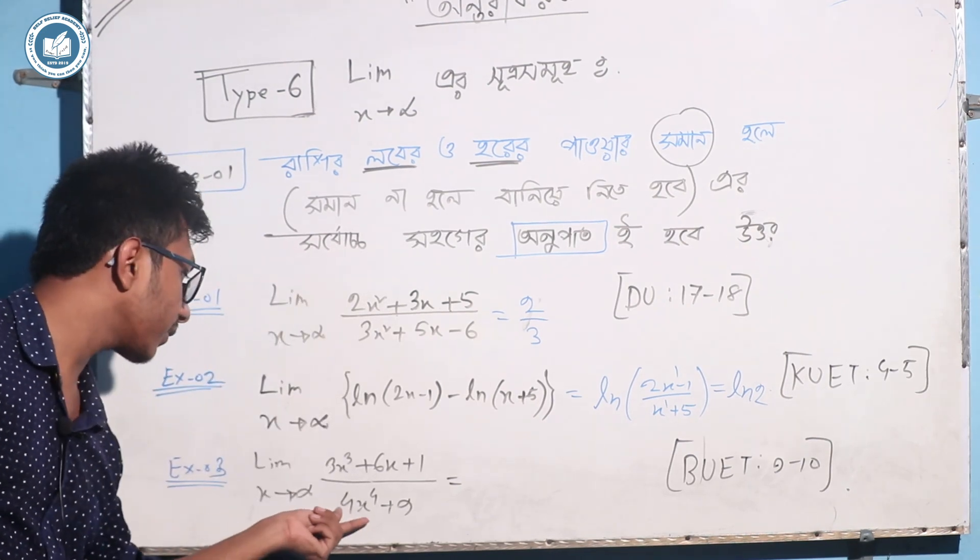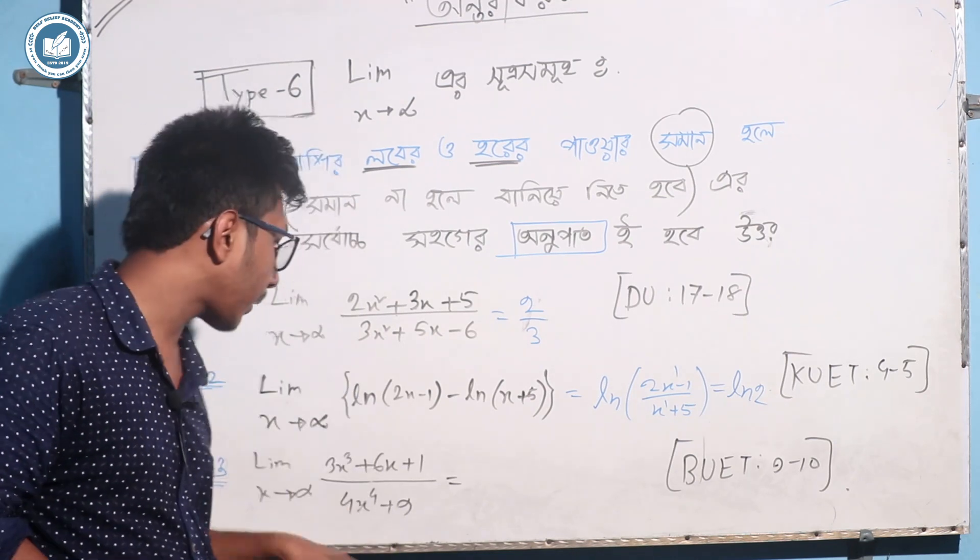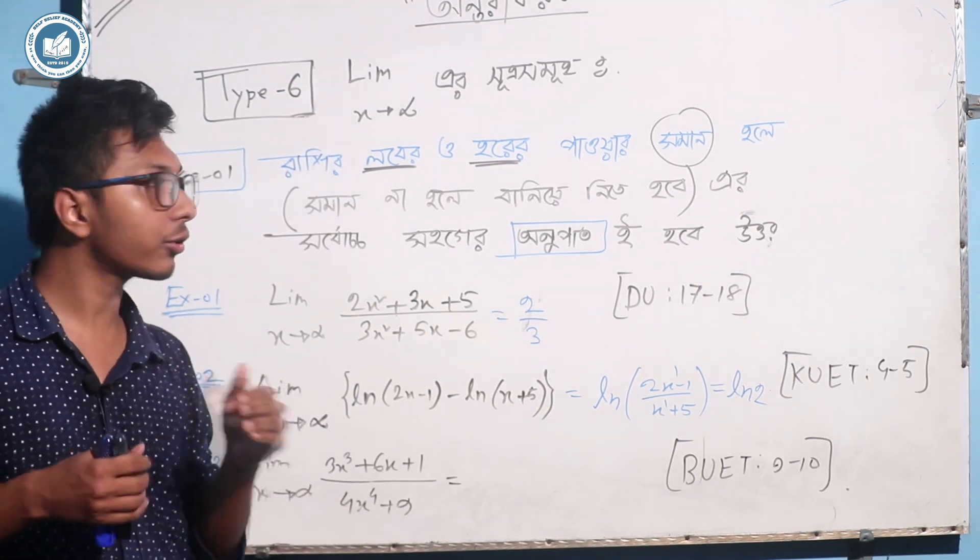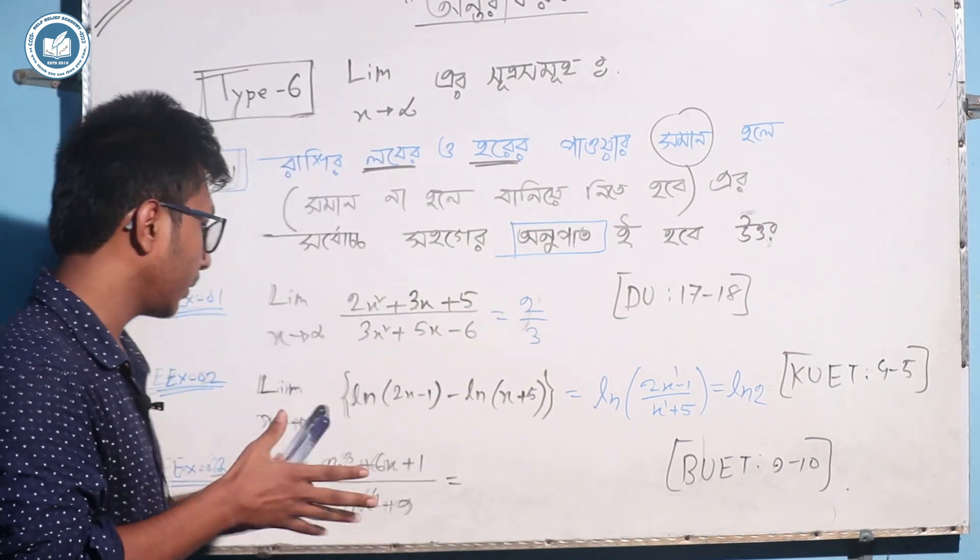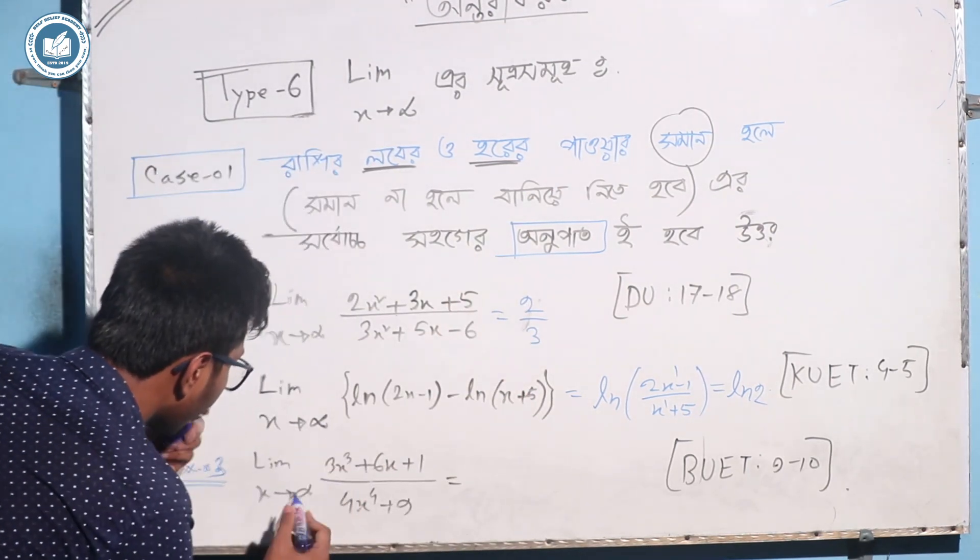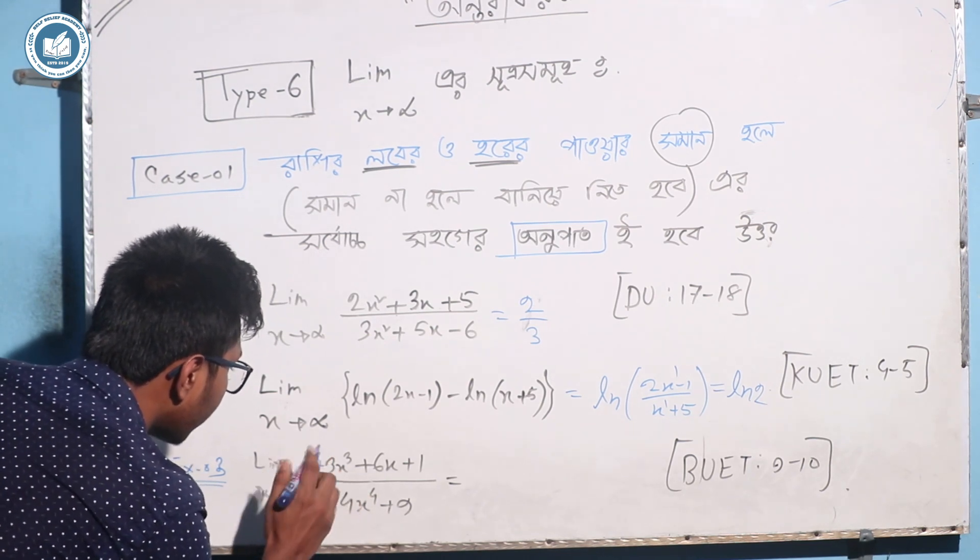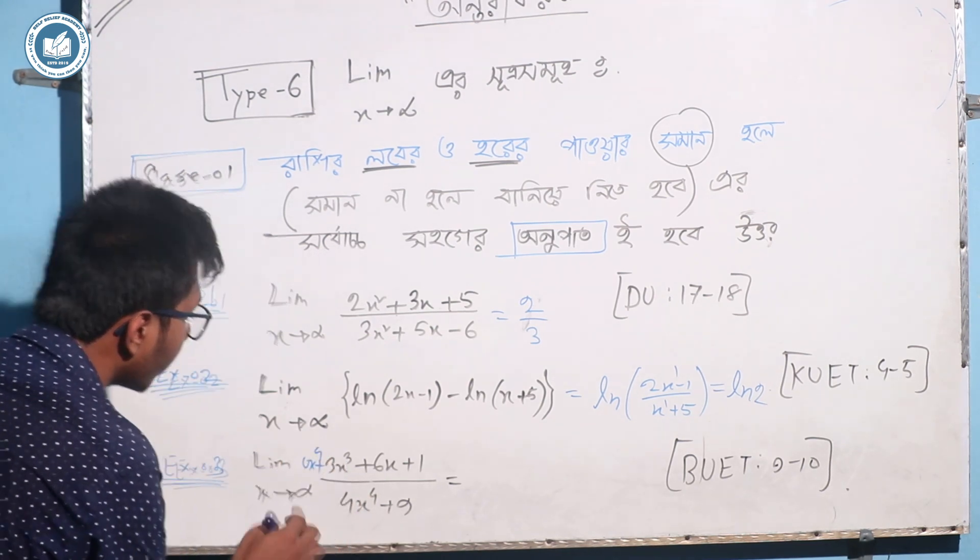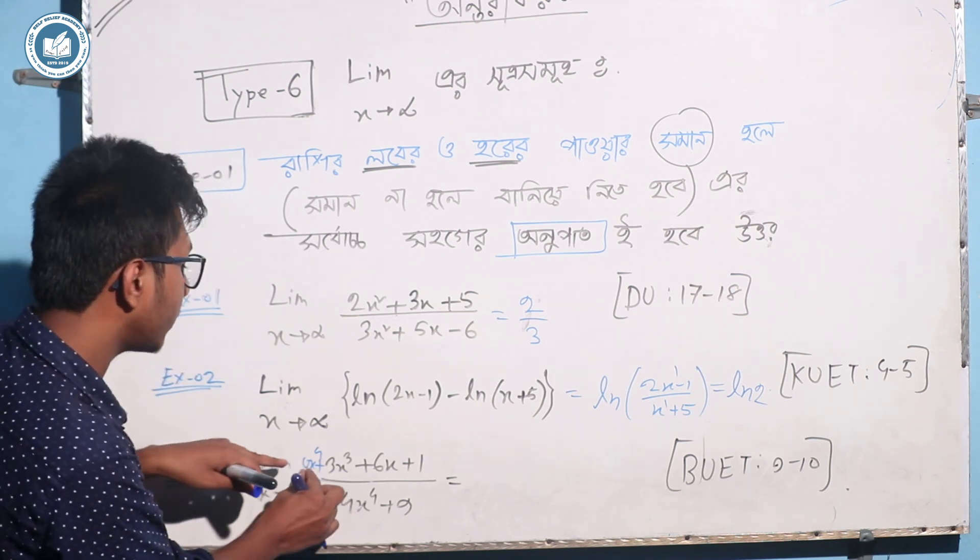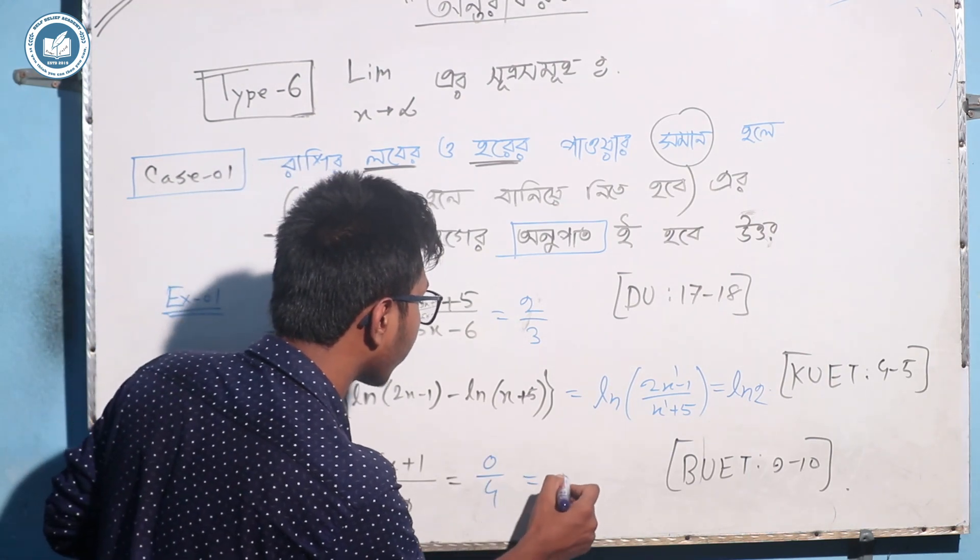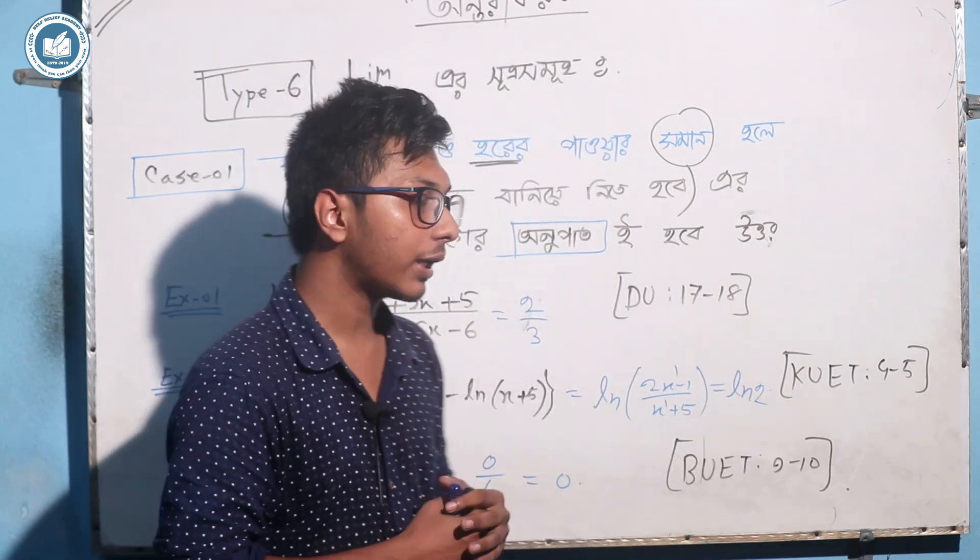Then here we have 4x, then the power is 4. And we will not have four, it is not non-stop. Now, how do we have to write? Here we can write 0x to the fourth. We have 0x to the fourth. So, in that way, it will be 0. So, this is the answer.